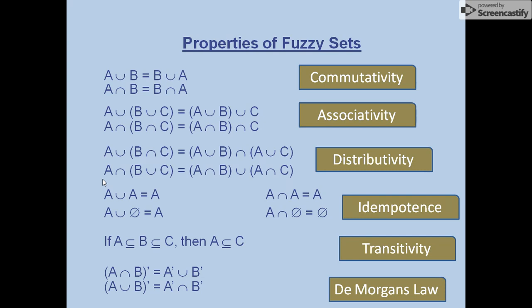According to transitivity, if we have three sets A, B, and C, and A is a subset of B and B is a subset of C, then A will also be a subset of C. De Morgan's law specifies that the complement of (A intersection B) equals A-complement union B-complement — we individually apply complement to both elements and change the operation sign. Similarly, the complement of (A union B) equals A-complement intersection B-complement. Union becomes intersection and intersection becomes union.